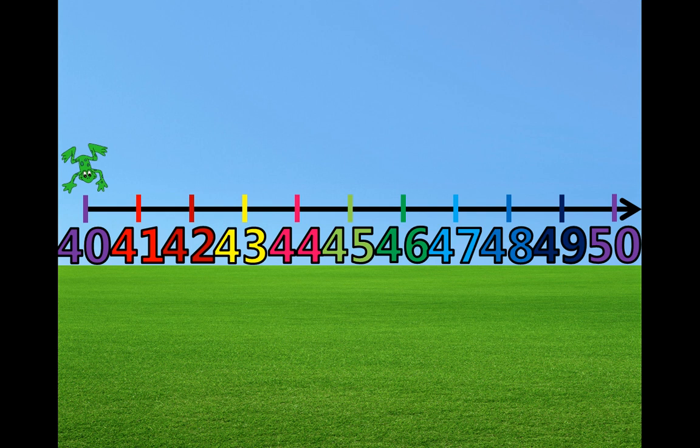This is Froggy the Frog. He likes to jump around on the number line. He's going to help us count from 40 to 50 on the number line. You can help him count, too. When he jumps, you can say the numbers with us. Ready, Froggy?